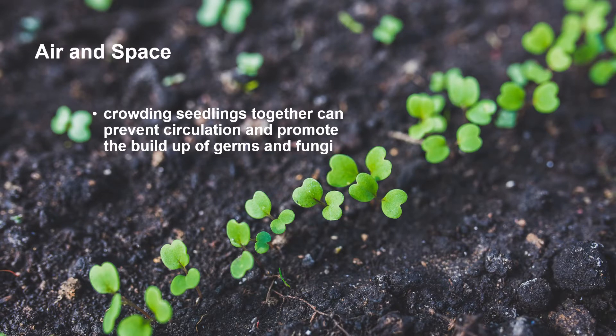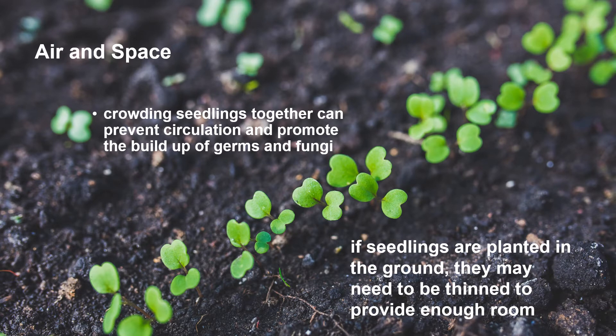Air and space are also important. It's important to provide air circulation among the growing seedlings. Crowding seedlings together can prevent circulation and promote the buildup of germs and fungi. If seedlings are planted in the ground, they may need to be thinned to provide enough room.